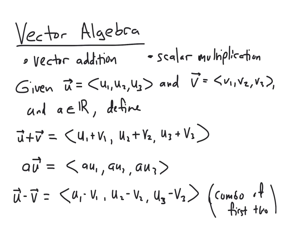So these are the operations that underlie vector algebra: vector addition, scalar multiplication, and combining them to get vector subtraction. The definitions given here are for vectors with three coordinates — vectors in R3. If we wanted to define all of these for R2, vectors in the plane, we just erase all the u3 and v3 terms throughout. The operations still work in R2, just with one fewer coordinate.